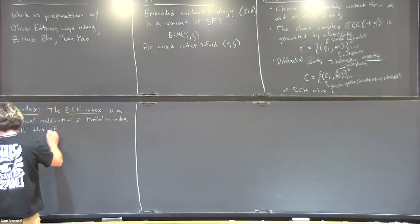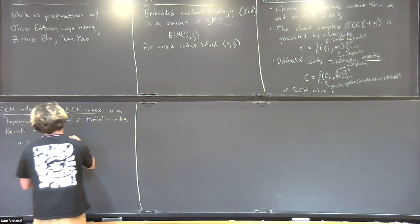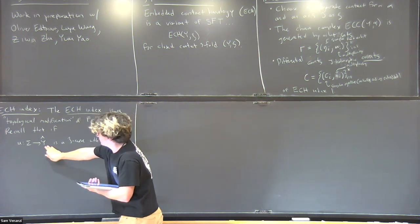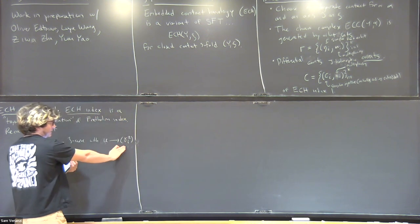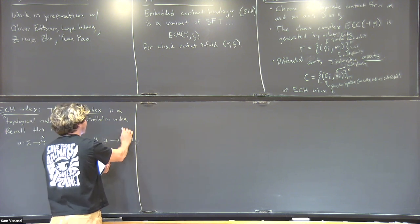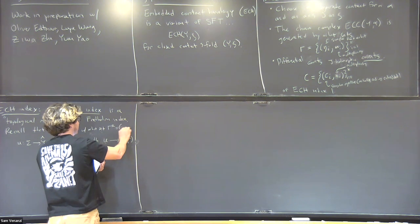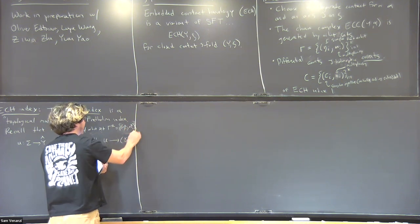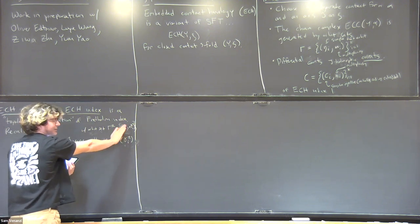Recall that if U is some finite energy J-curve in the symplectization of a contact manifold, it is asymptotic to some orbits at plus or minus infinity. These asymptotic orbits—denoted gamma_i plus and gamma_i minus—also represent some orbit sets: alpha plus and alpha minus. Each of these gamma_i will be a cover of one of the underlying simple orbits.